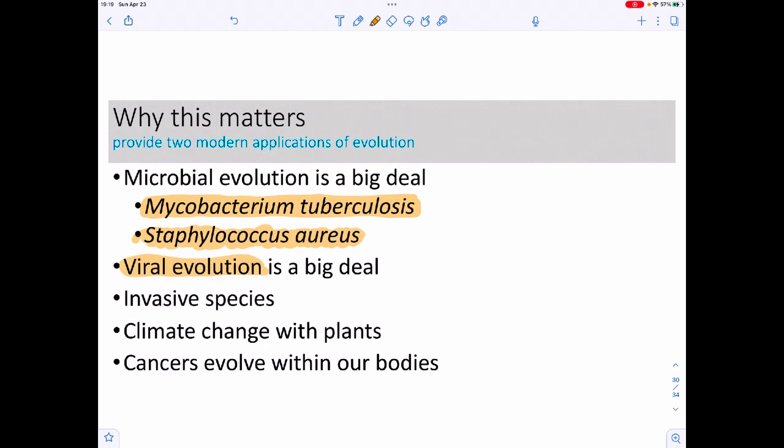Invasive species are starting to change. That would be an example like that cane toad in Australia, and it's taking out native species. Climate change is actually starting to affect plants, except that the plants aren't necessarily keeping up, so that's bad. If you get cancer, cancers actually have the ability to evolve, and you can have cancers that don't react to your anti-cancer medication. You're giving chemotherapy and it's not helping—that's because the cancers have evolved to avoid the treatments.